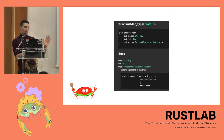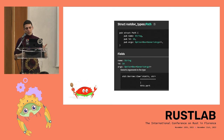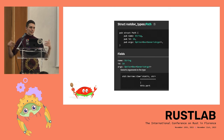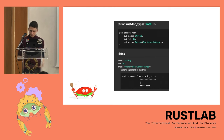Rustdoc JSON format is in nightly, as I said before. But since we only use it for reflection at build time, we don't actually use it at runtime.